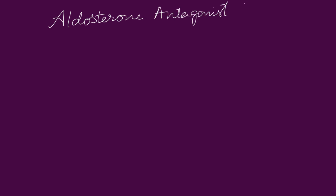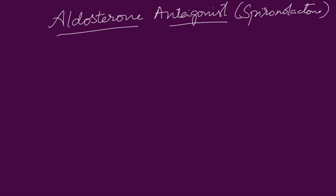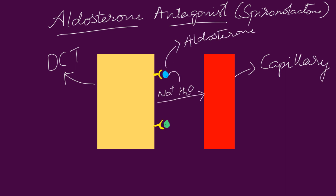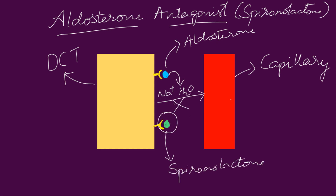Aldosterone antagonists: generally, aldosterone attaches to its receptor on the walls of the distal convoluted tubule cells and mediates sodium and water reabsorption into the blood. The aldosterone antagonist drugs compete with aldosterone for the receptors. They prevent the reabsorption of sodium and water into the blood capillaries, so the volume of the blood does not increase and the blood pressure decreases.